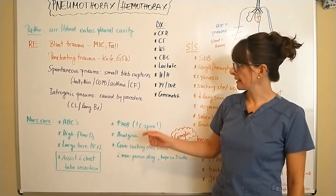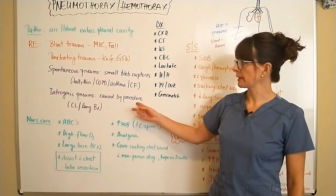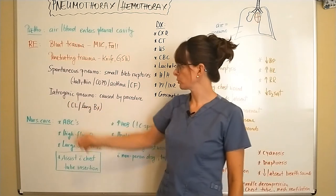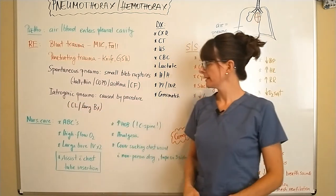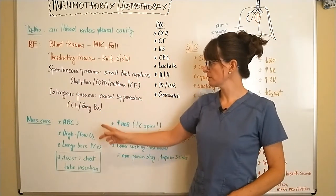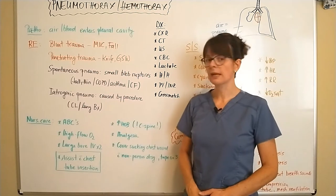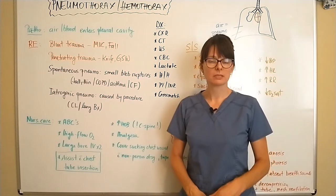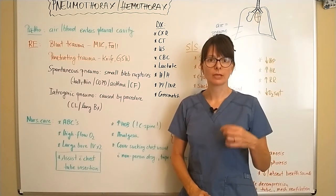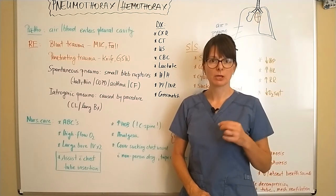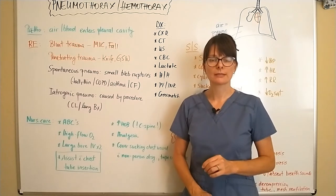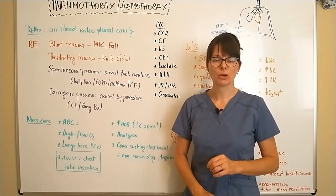Pneumothorax can also be caused by a procedure, which is then called an iatrogenic pneumothorax. This can happen when a central line is inserted or during a lung biopsy — somehow during the procedure, a lung is inadvertently punctured, letting air release into the pleural cavity.